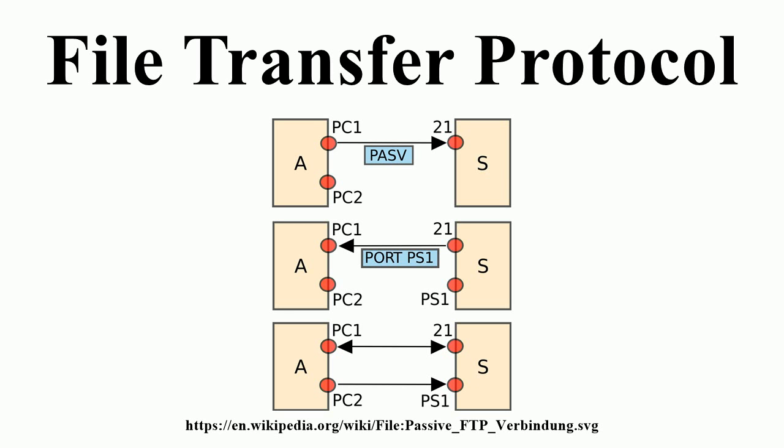FTP over SSH is the practice of tunneling a normal FTP session over a Secure Shell connection. Because FTP uses multiple TCP connections, it is particularly difficult to tunnel over SSH. With many SSH clients, attempting to set up a tunnel for the control channel will protect only that channel. When data is transferred, the FTP software at either end sets up new TCP connections and thus has no confidentiality or integrity protection. It is necessary for the SSH client software to have specific knowledge of the FTP protocol to monitor and rewrite FTP control channel messages and autonomously open new packet forwardings for FTP data channels.